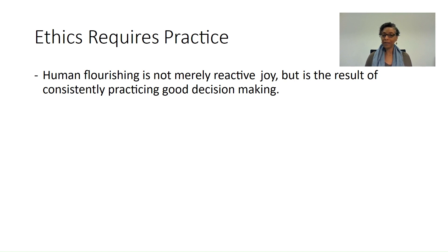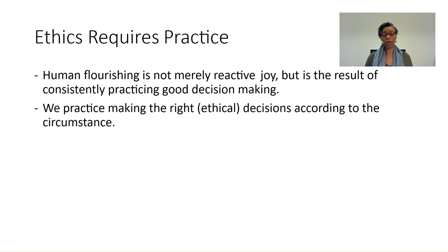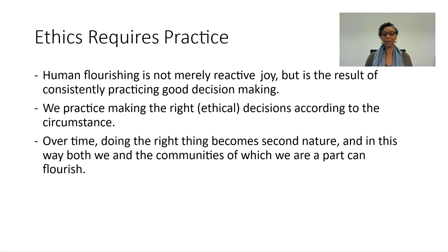Just as a cheetah becomes an excellent cheetah — its function is to run fast, to hunt, and to chase — and it achieves that by practicing, we too become excellent human beings by practicing good decision-making, what Aristotle calls rational virtue. When we're faced with two extremes, Aristotle's advice is to act according to the golden mean. For example, between cowardice and complete recklessness, the golden mean would have us act courageously — finding a balance between a bit of fear and a bit of bravado. We practice making the right ethical decision according to the circumstance, finding that mean as it's needed. Over time, doing the right thing becomes second nature, and in this way both we and the communities of which we are a part can flourish.